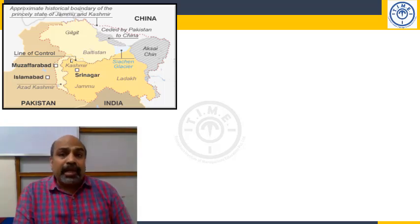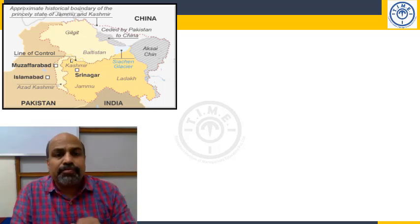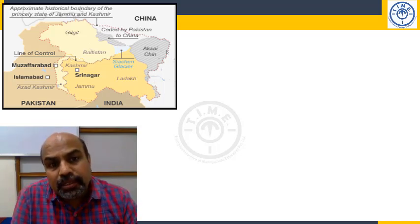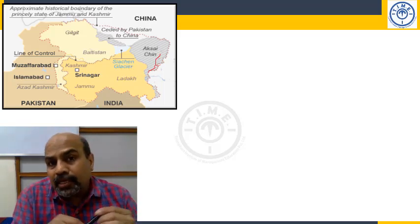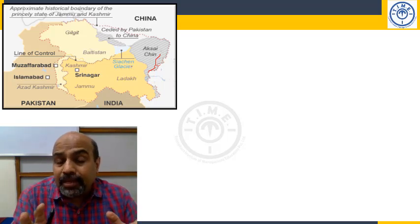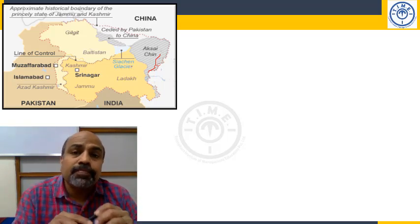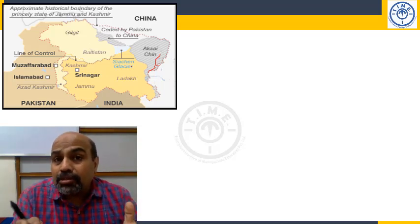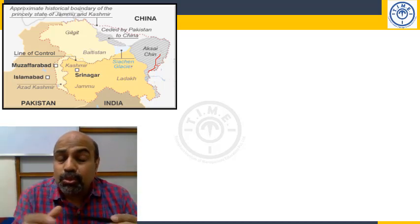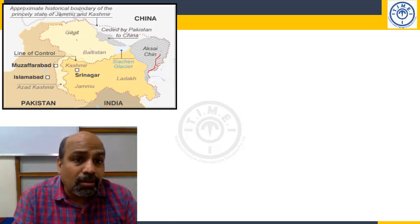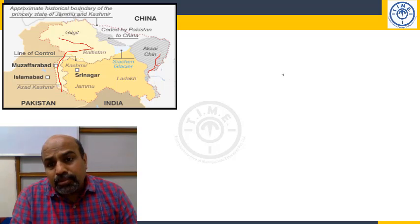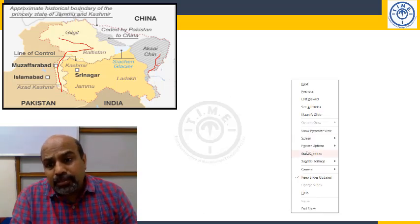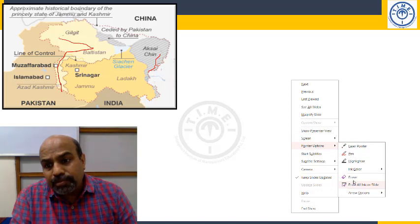Before explaining the LOC, let me familiarize you with a few things. This area here is Aksai Chin — this entire colored region is Aksai Chin, area in Ladakh controlled by China, about 37,000 square kilometers. This area is all occupied by Pakistan. There is also another area ceded by Pakistan to China, which I'll come to in a while.